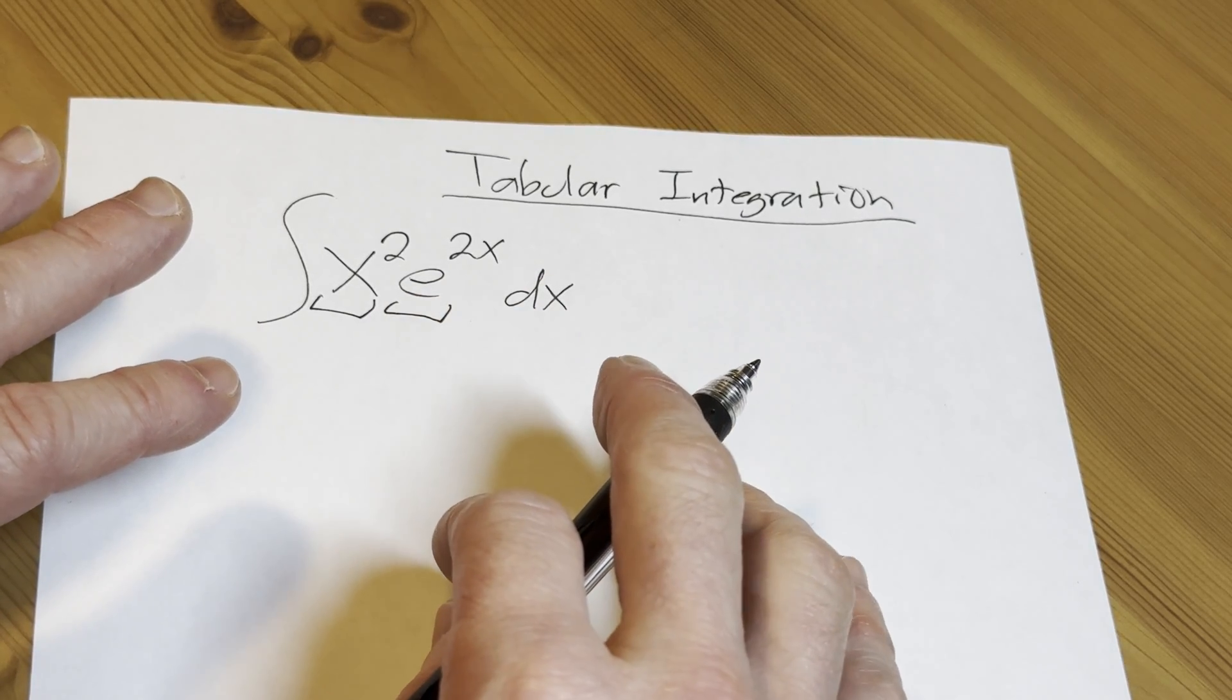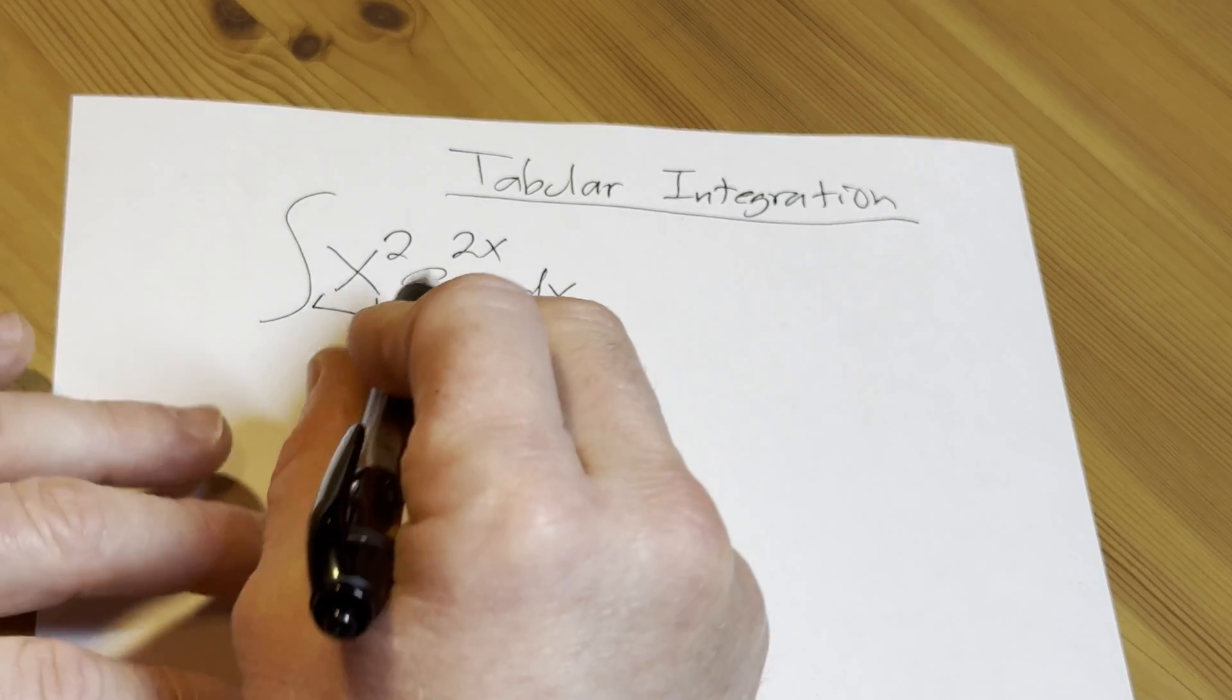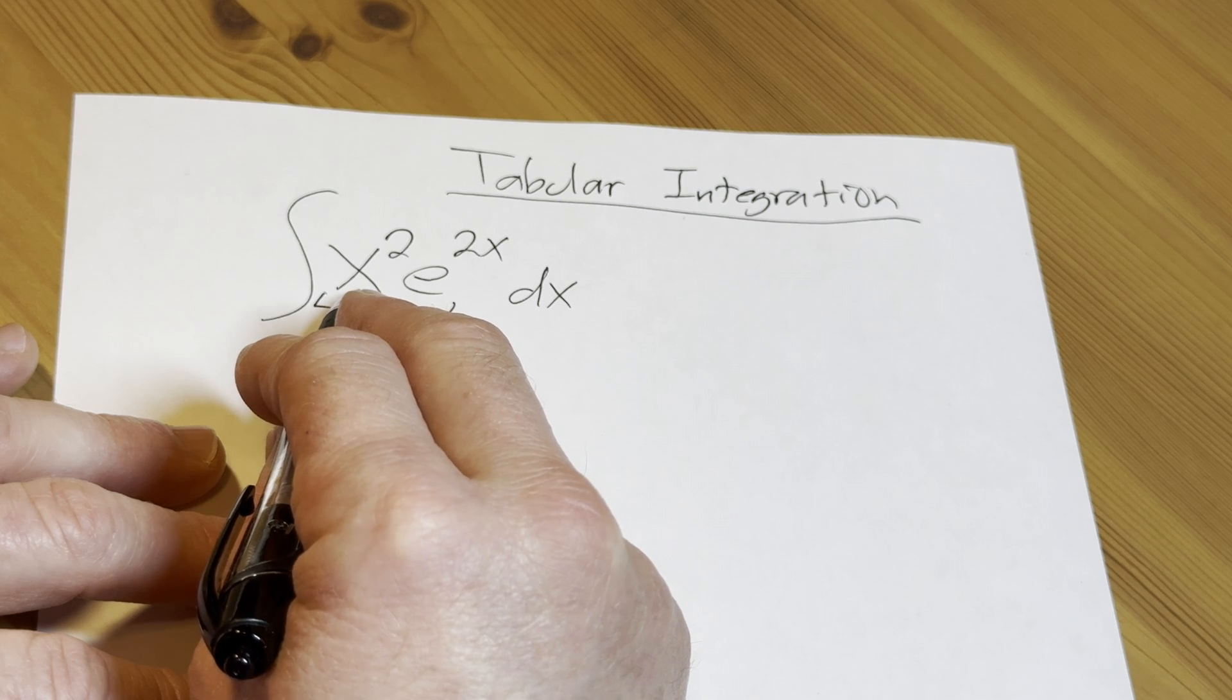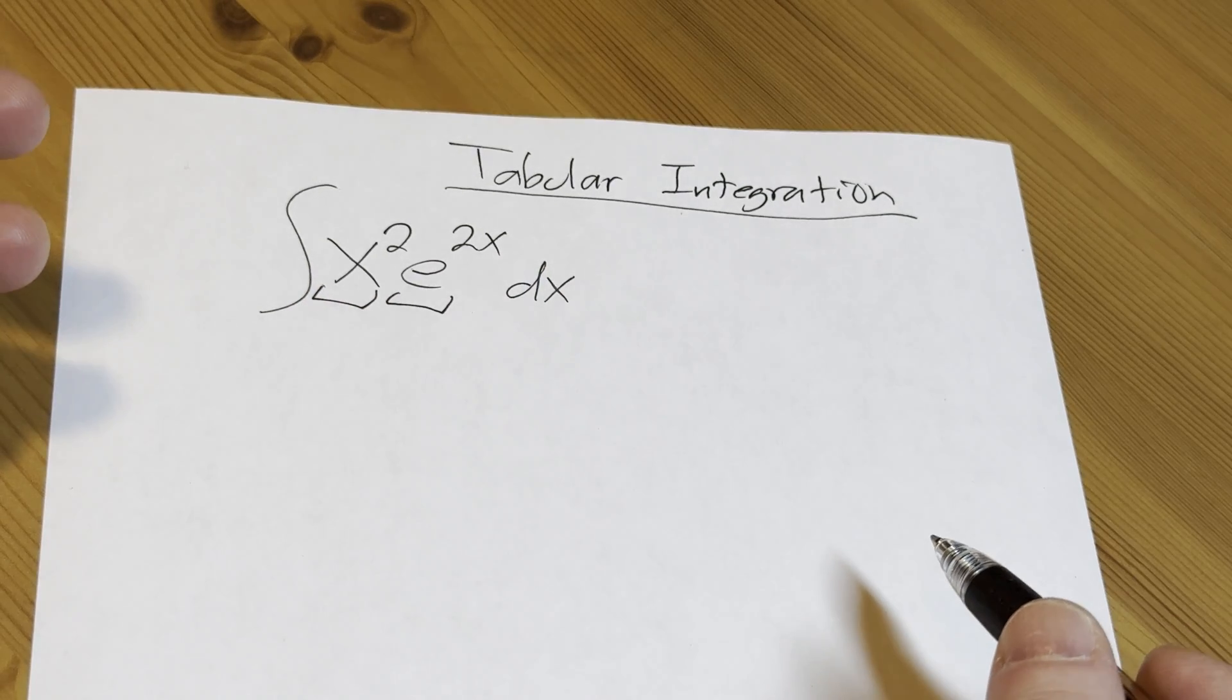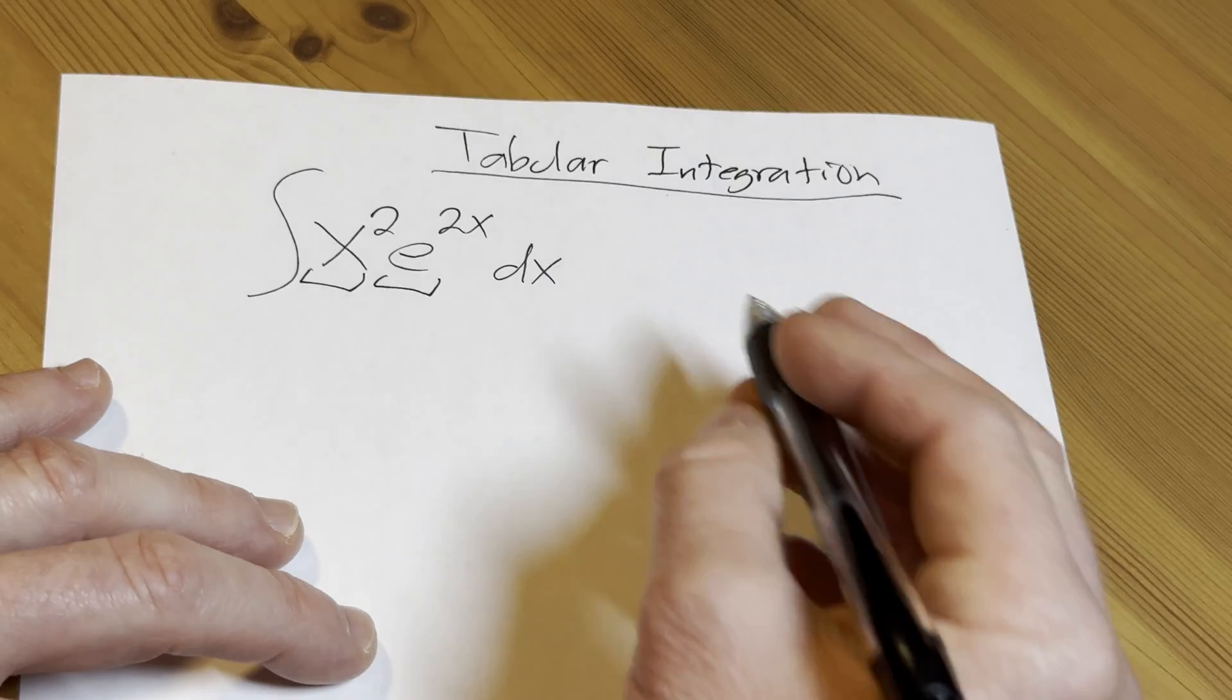So here you can see that when we differentiate x squared over and over again, it's eventually going to be zero, right? So let's start with that. You write down x squared, and then over here we write down e to the 2x, and then you just start differentiating.